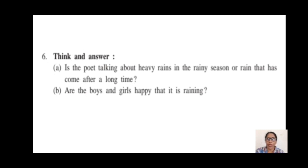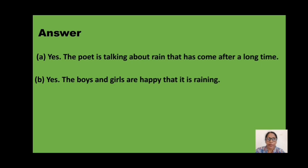Question 6 — Think and answer. A: Is the poet talking about heavy rains in the rainy season or rain that has come after a long time? B: Are the boys and girls happy that it is raining? The answer is — A: Yes, the poet is talking about rain that has come after a long time. B: Yes, the boys and girls are happy that it is raining.